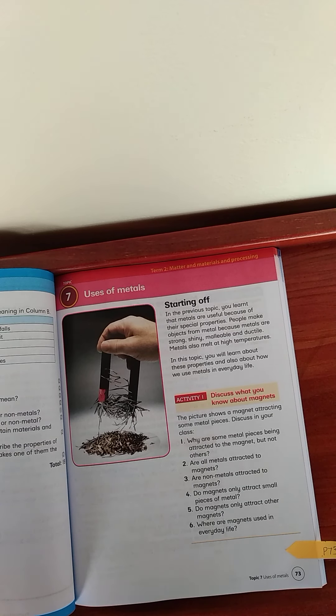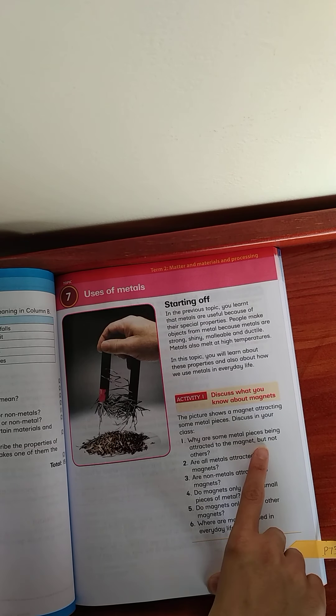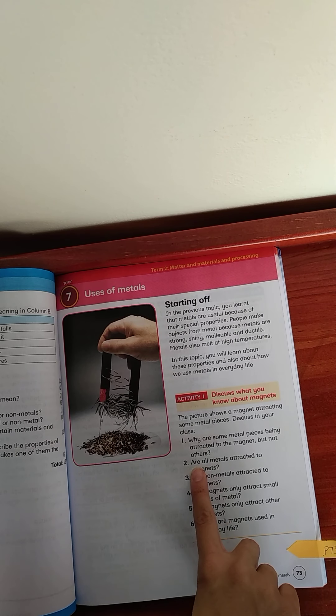Now, you need to do activity one. You need to have a look at this picture. Why are some of the metal pieces being attracted to the magnet but not others?